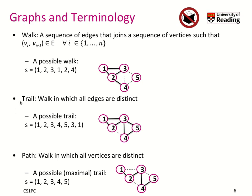Now there is a trail. A trail is a walk in which edges are distinct, which means you can walk over an edge only once. So I can go from 1 to 2, to 3, to 4, to 5, to 3, to 1. Each edge I have only traversed once, so that's a valid trail.